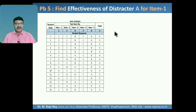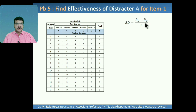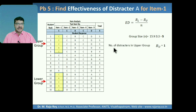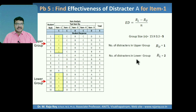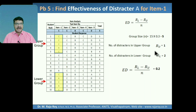Next, find the effectiveness of distractor A for item 1. In item 1, the correct answer is C. We need to find how answer A is distracting students from the correct answer. ED equals RL minus RU divided by N. Group size equals 5. Number of distractors in the upper group: only 1 student indicated A, so RU equals 1. Number of distractors in the lower group: 2 students answered A, so RL equals 2. ED equals RL (2) minus RU (1) divided by N (5), giving ED equal to 0.2.